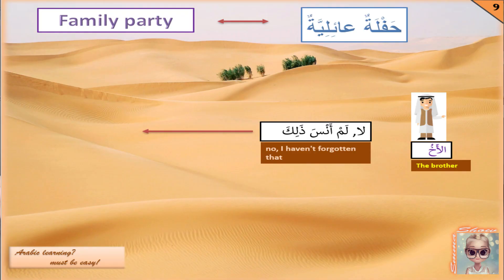The brother answers: لا, meaning 'no', and then says لم أنسى ذلك, meaning 'I haven't forgotten that.' The verb أنسى is in the present tense, so the negation comes with لم. The verb means 'to forget' — أنا أنسى, 'I forget'; أنت تنسى, 'you forget' for masculine; أنتِ تنسين, 'you forget' for feminine. And ذلك means 'that' or 'this', depending on context.